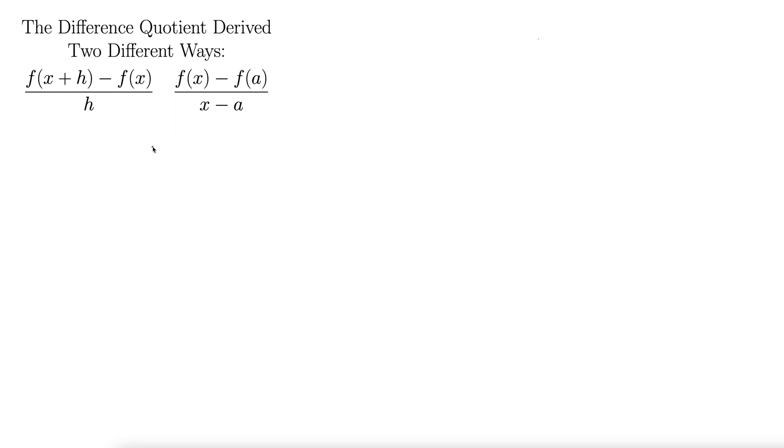So let's look at what these actually mean. We'll start with the h version. I'm going to draw an arbitrary function here. Maybe it comes up like this and goes up like so. We'll call this f of x.